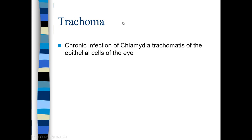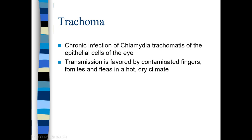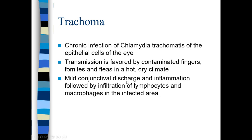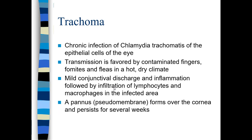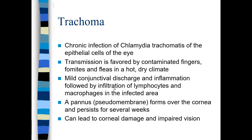Viral conjunctivitis is more common in adults, while bacterial conjunctivitis is more common in children. Trachoma is another infection — a chronic infection of Chlamydia trachomatis in the epithelial cells of the eye. Transmission is via fingers with chlamydia, fomites like doorknobs, surfaces, phones, and fleas can also transmit chlamydia. There is mild discharge and inflammation, then lymphocytes and macrophages enter the infected area. A pseudomembrane forms over the cornea, blocking vision. If not treated, it can lead to corneal damage and impaired vision.